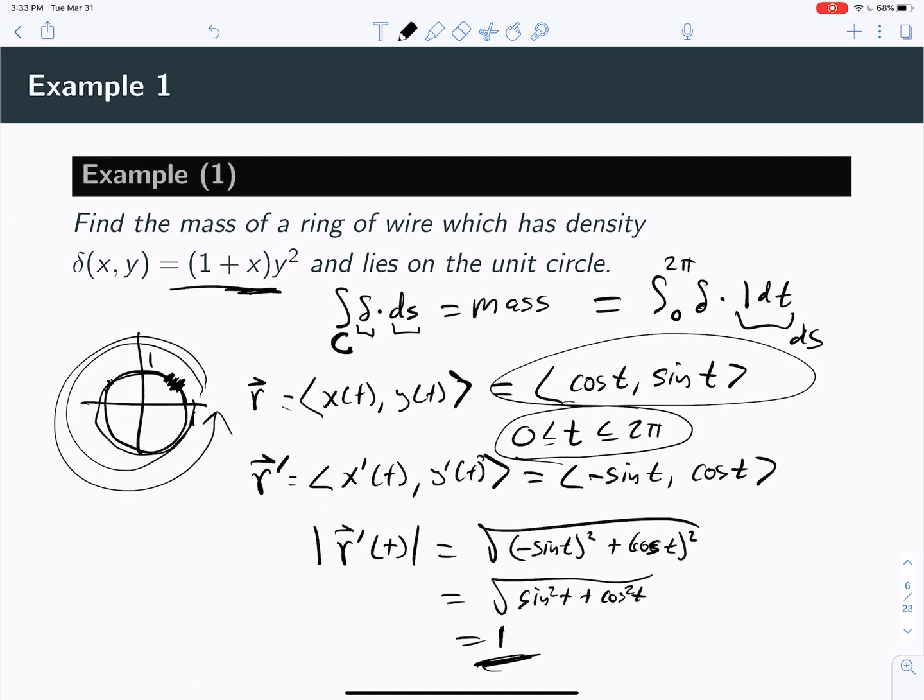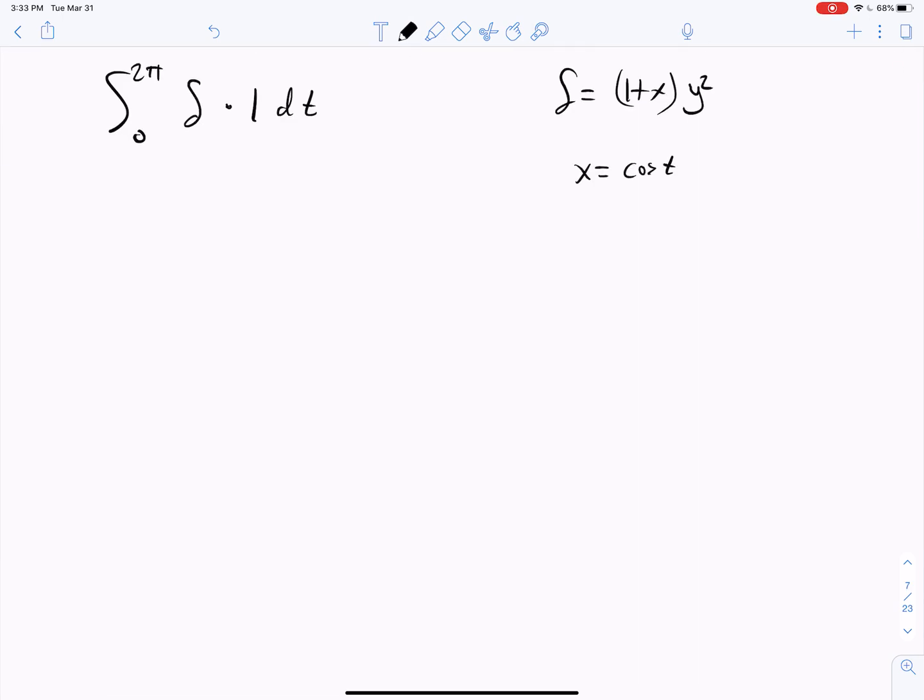δ equals 1 plus x times y squared, if I remember correctly. Yes, and x is cosine t and y is sine t.